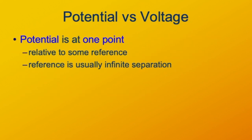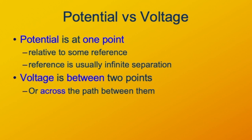Potential is a quantity we can define at one point in space — a charge at that point would have a certain electric potential energy relative to infinite separation. Voltage is a difference between two points, or across a path between two points. So if we have our two leads of our voltmeter at two different points in a circuit, we say the voltage between point A and point B, or the voltage across some component — the potential difference between the two leads.